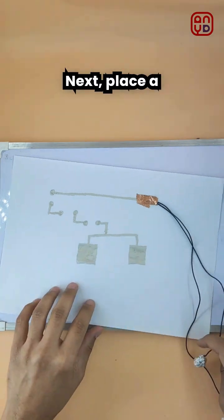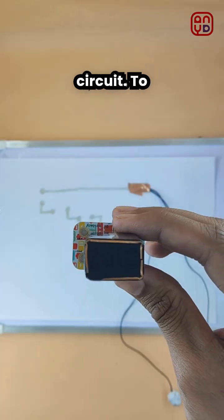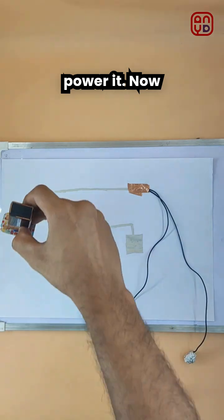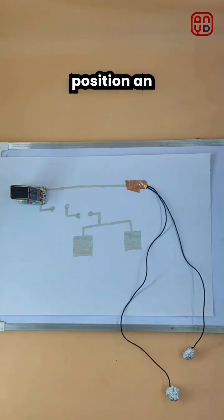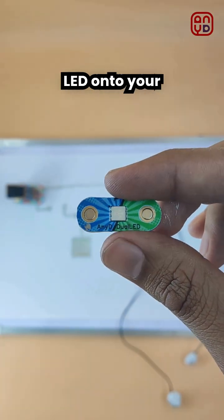Next, place a 9V battery onto the circuit to power it. Now carefully position an LED onto your circuit.